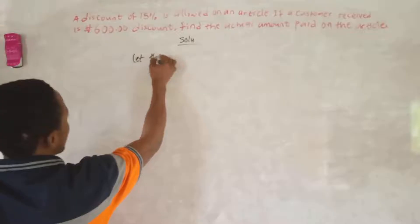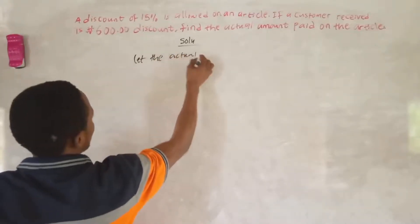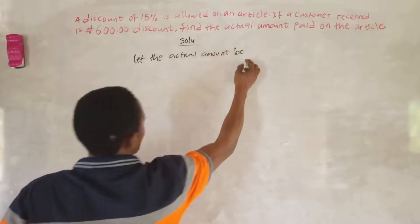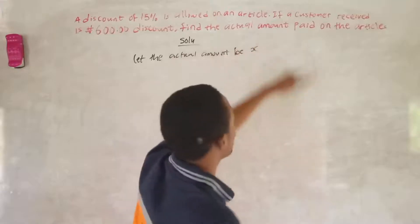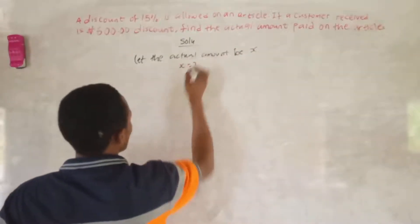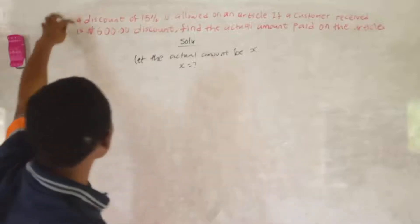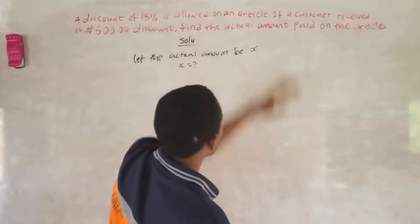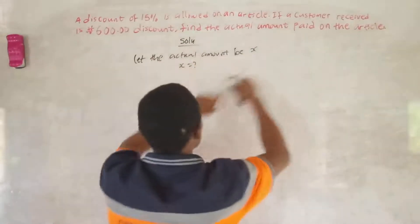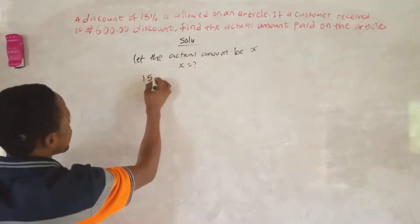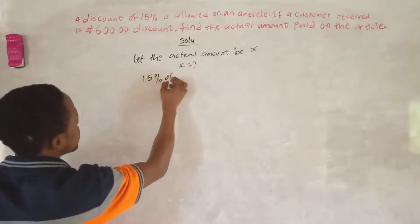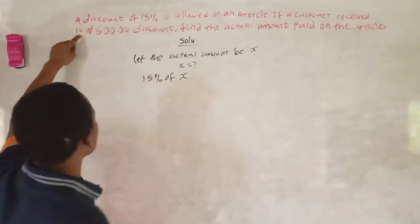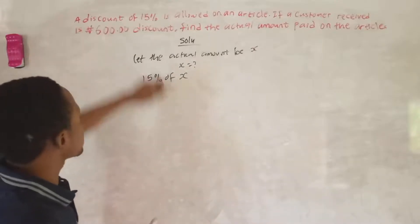Let the actual amount be S. So you want to find what S is, which means the actual amount. So you know that the 15% discount is allowed on the article, and the article amount is S. So we have 15% of S, which is the actual amount. And they say that if a customer receives 600, the customer receives 600 naira.